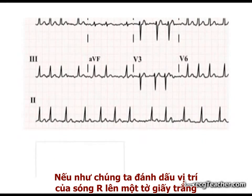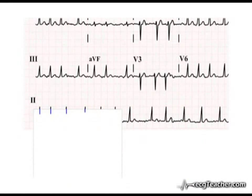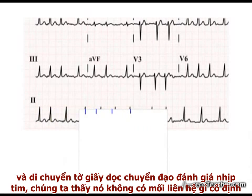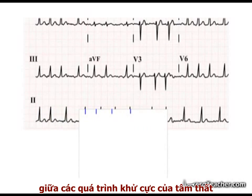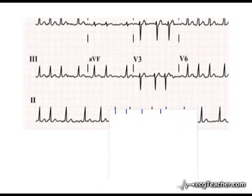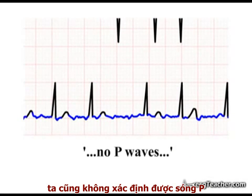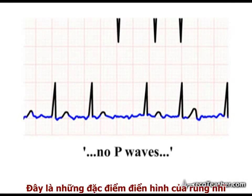If we mark out a set of R-waves on a piece of paper, moving along the rhythm strip we find no fixed relationship between episodes of ventricular depolarization. Furthermore, there are no identifiable P-waves. These are the characteristic ECG findings in atrial fibrillation.